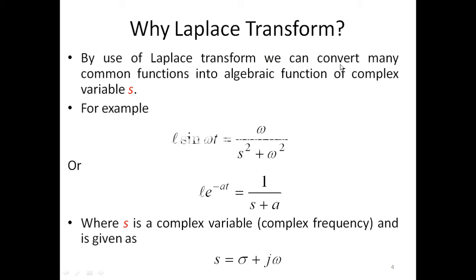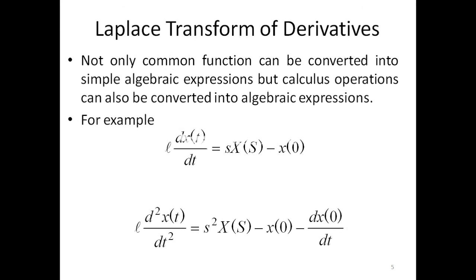Using Laplace transform we easily convert convolution into multiplication. There are more advantages: we can convert many common functions into algebraic functions of complex variable s. For example, we can convert sinusoidal or exponential functions into simple algebraic functions. The Laplace transform of sin(ωt) is ω/(s² + ω²), and the Laplace transform of e^(−at) is 1/(s + a), where s is the complex variable s = σ + jω, with σ as the real part and ω as the imaginary part.